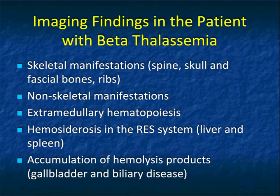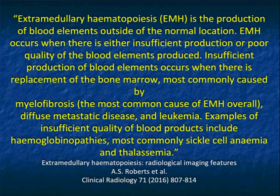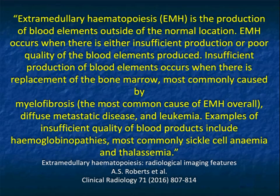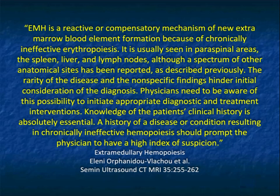In beta thalassemia, we talk about bony changes and non-bony changes — extramedullary hematopoiesis, gallbladder disease, and hemosiderosis. An article by Roberts makes the point that extramedullary hematopoiesis occurs when there is either insufficient production or poor quality of blood elements. Insufficient production occurs when there is replacement of the bone marrow, most commonly by myelofibrosis, diffuse metastasis, and leukemia. You don't always have the diagnosis, and extramedullary hematopoiesis can help or add to confusion.